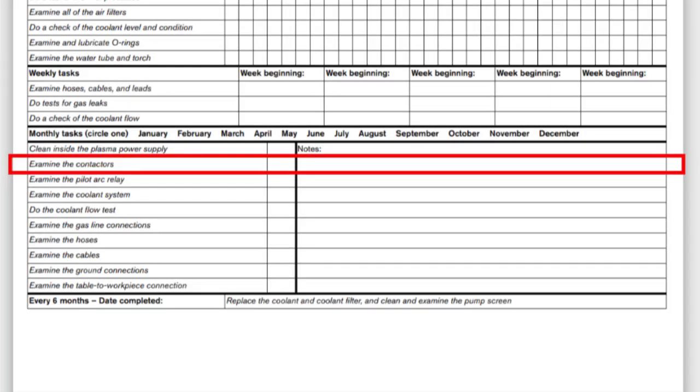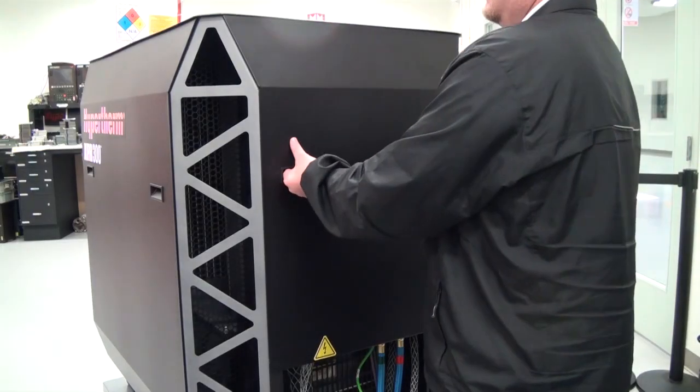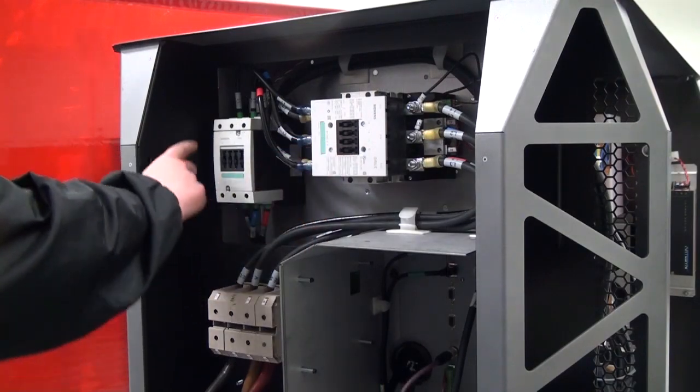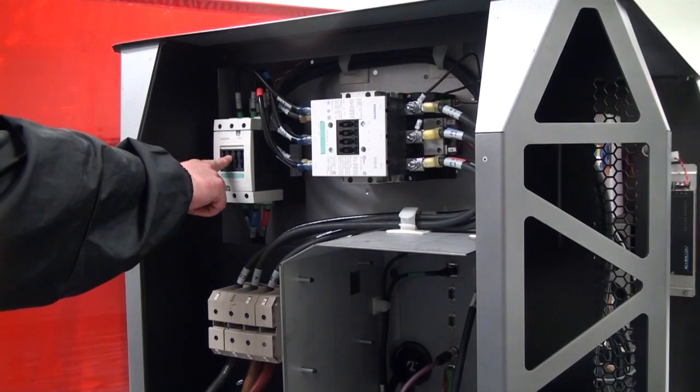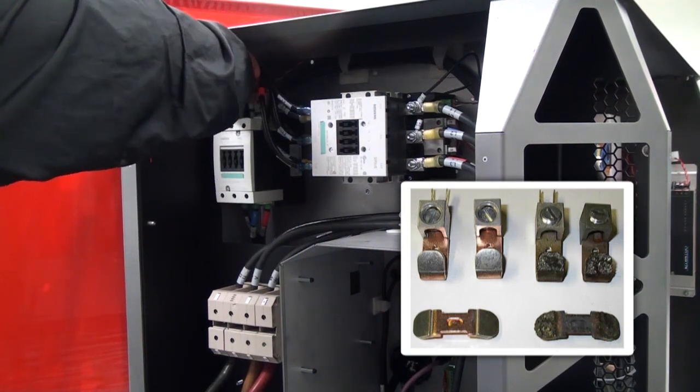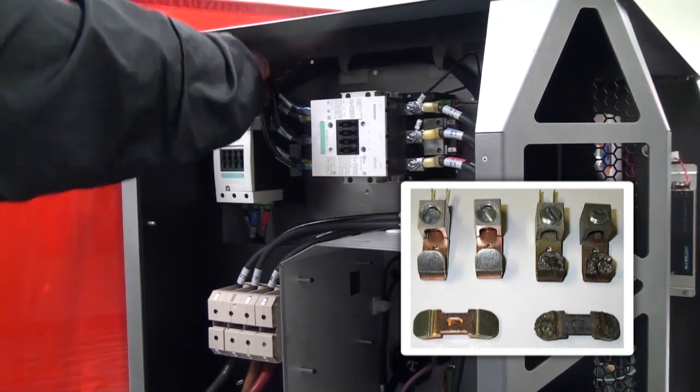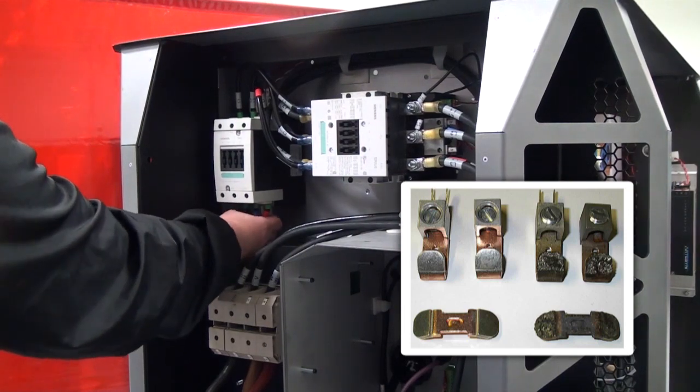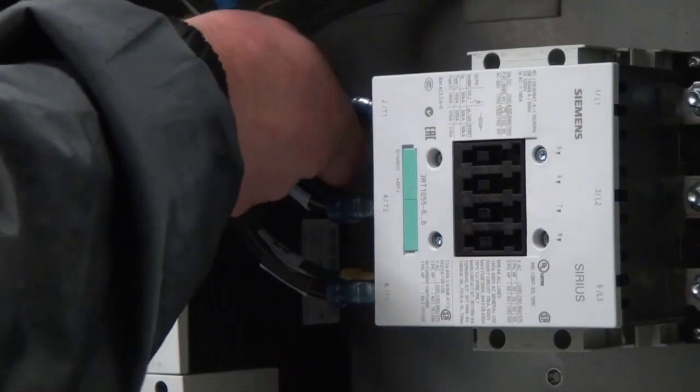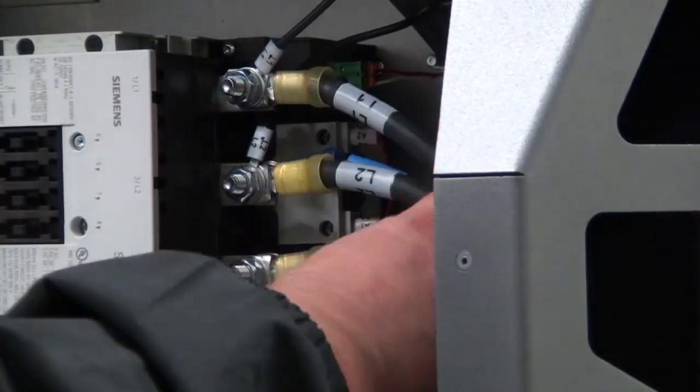Next, examine the contactors. The XPR system uses two contactors, the main contactor and the inrush contactor. Both can be inspected the same way. You are looking for black or rough surfaces on the contact points. If this condition is found, replace the contactors. Burnt or severe pitting can cause phase loss conditions and may damage other components such as the choppers.